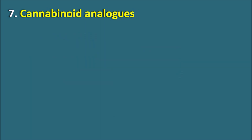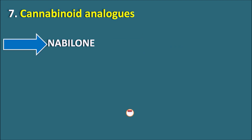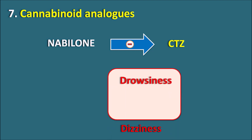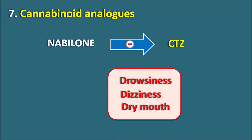The seventh class is cannabinoid analogs. One drug is nabilone. Nabilone suppresses the CTZ chemoreceptor trigger zone, thereby controlling nausea and vomiting. Since it is a cannabinoid, it produces central side effects like drowsiness, dizziness, and dry mouth.